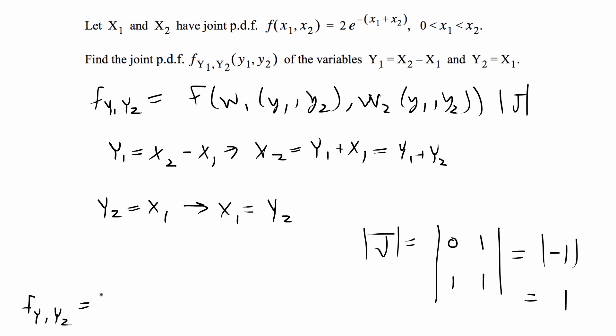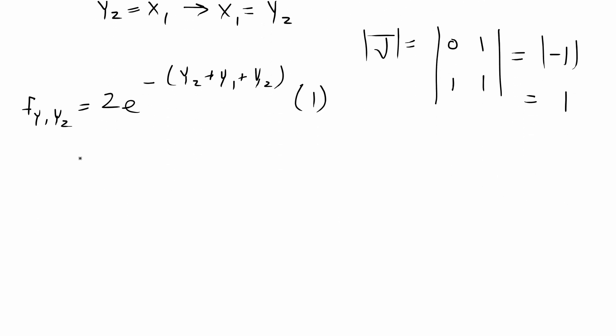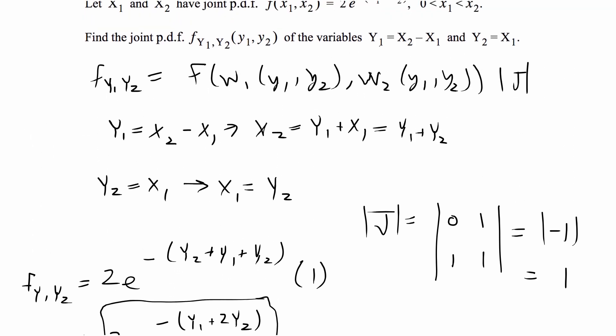This is going to be 2e^-(x1 + x2), where x1 is y2 and x2 is y1 + y2, all times the Jacobian which is 1. If we simplify this, that's 2e^-(y1 + 2y2). That's our new PDF. Let's also find the new ranges.